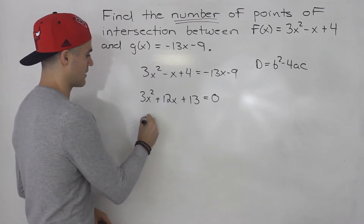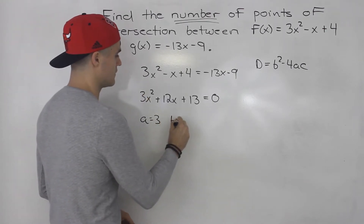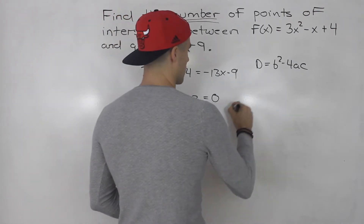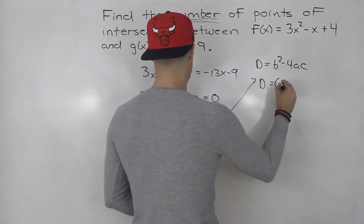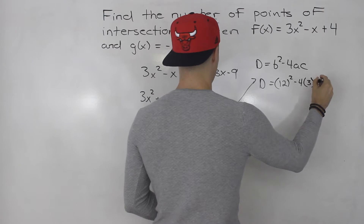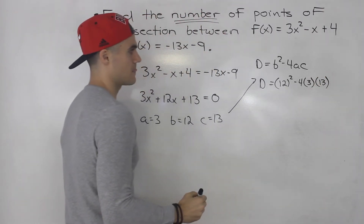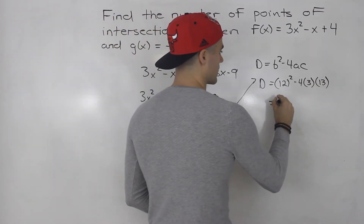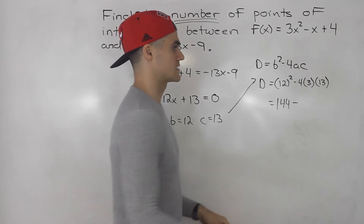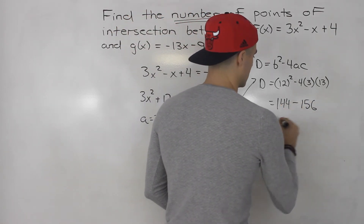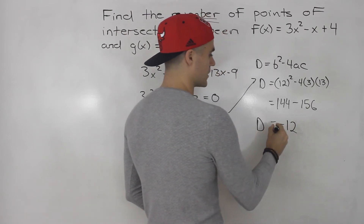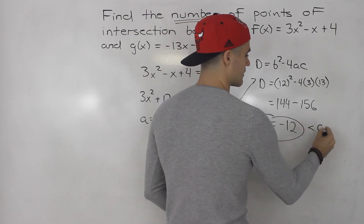The a value of this quadratic equation is 3, the b value is 12, and the c value is 13. So the discriminant is b squared minus 4ac: 12 squared minus 4 times 3 times 13. That gives us 144 minus 156, which equals negative 12.